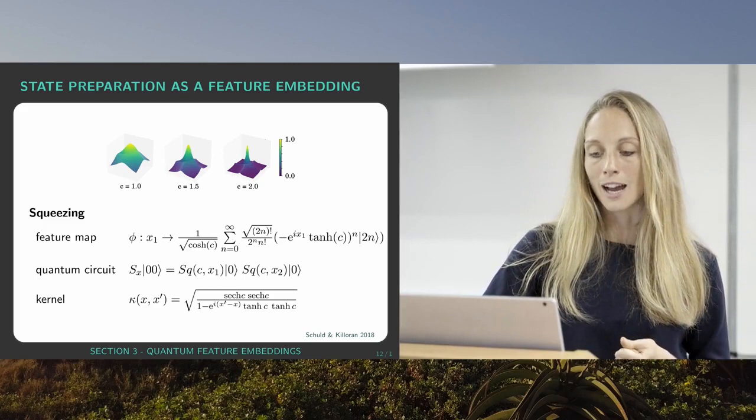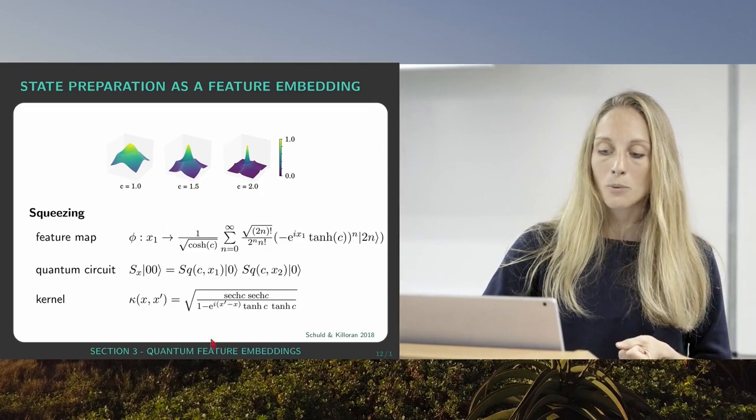So let's look at the quantum circuit first. Now we don't have qubits here, but these are two Q modes. Think of it very vaguely as two laser beams, but it's a little bit more complicated than that.